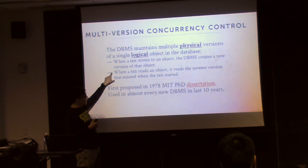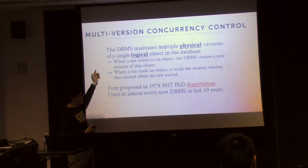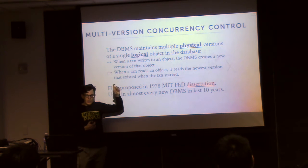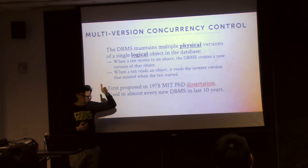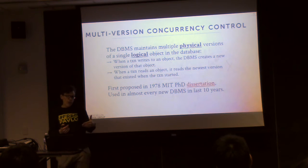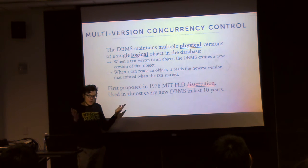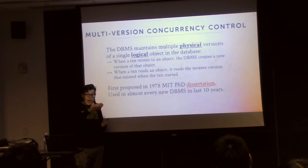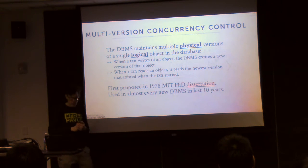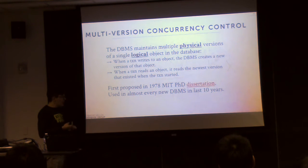When a transaction reads an object, the database system has to figure out what's the correct version you should look at based on when your transaction started. We talked about snapshot isolation last class. In MVCC this works quite nicely — you want to see the version of an object that existed before your transaction started, and that was made by a transaction that had committed before you started. We'll see how in Hekaton we can relax that a little bit to get better parallelism.